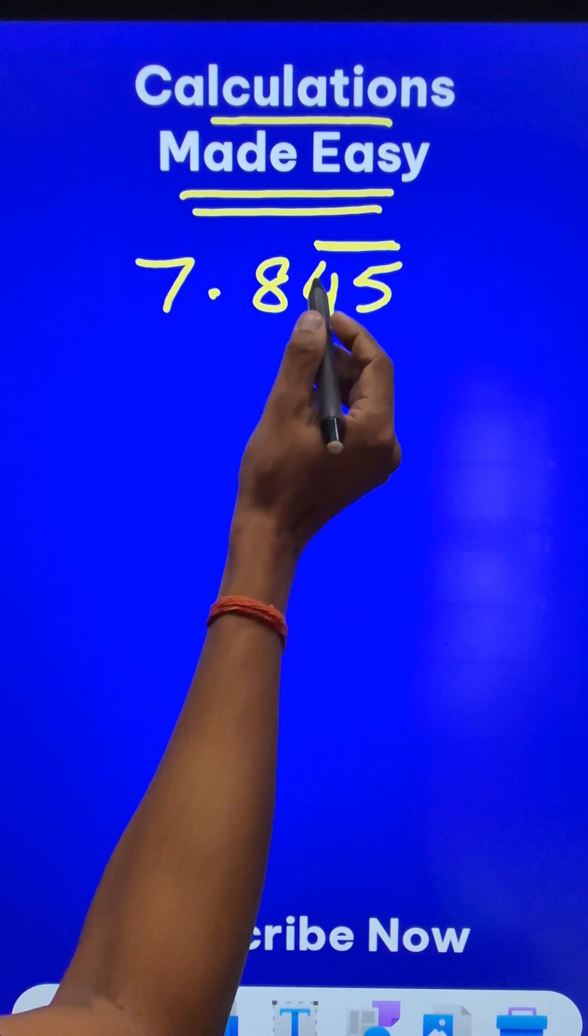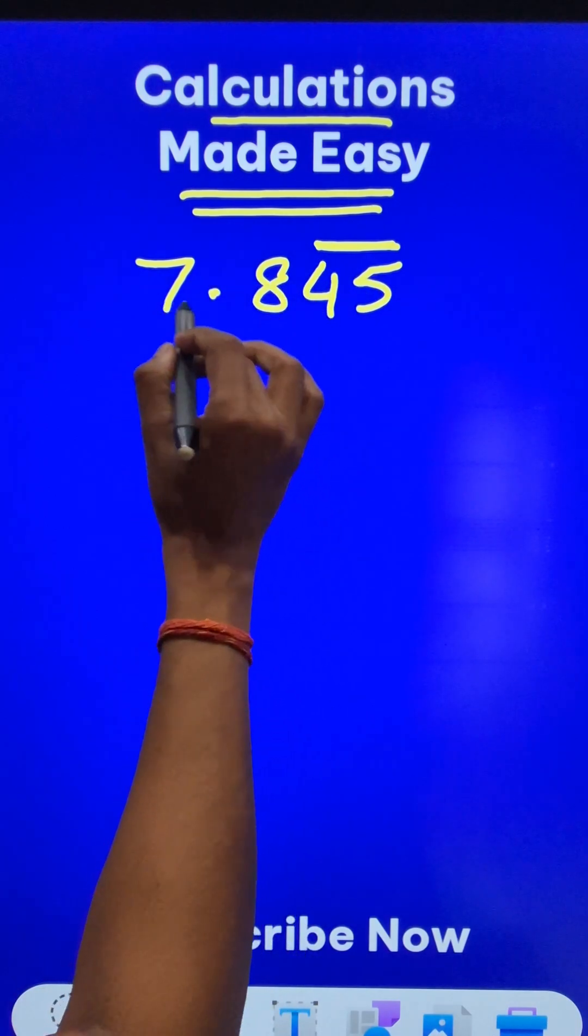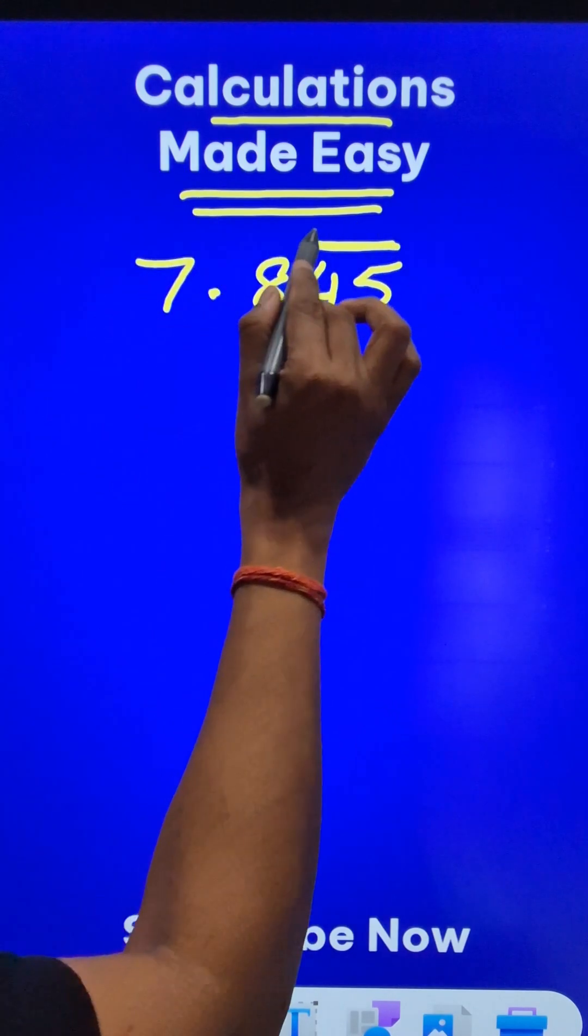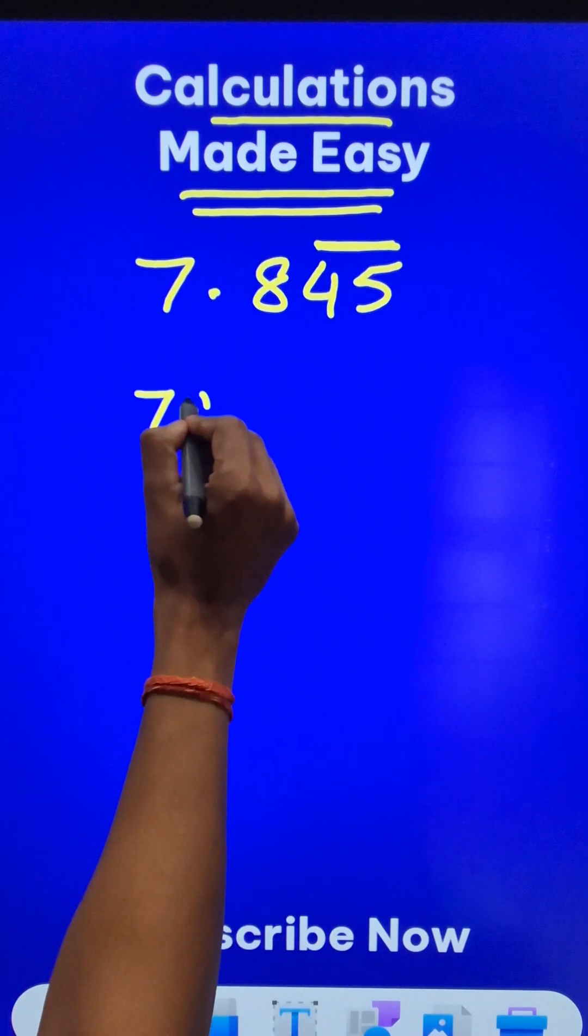Now how do you express that in the form of a rational number like p upon q? For this, let's write the entire number first without considering the decimal and the bar. So the number is 7845.